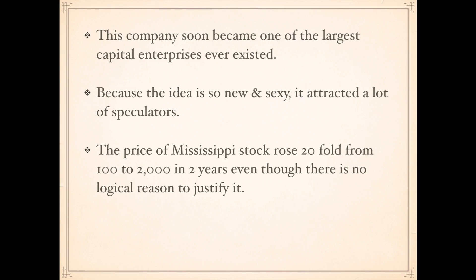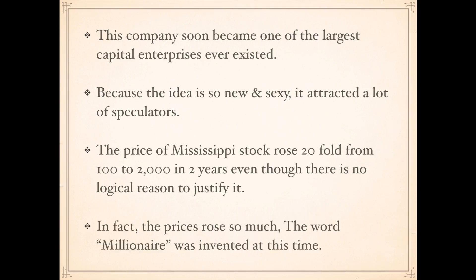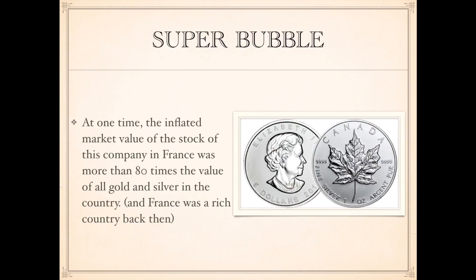The price of Mississippi Company stock rose 24 times — from 100 to 2,000 pounds in two years. Imagine you invest 50K; two years later you become a millionaire. Even though there was no logical reason to justify it and the company wasn't making much money. In fact, the prices rose so much that the word 'millionaire' was invented at this time. At one point, the inflated market value of this company in France was more than 80 times the value of all gold and silver in the country — imagine how enormous this bubble was.